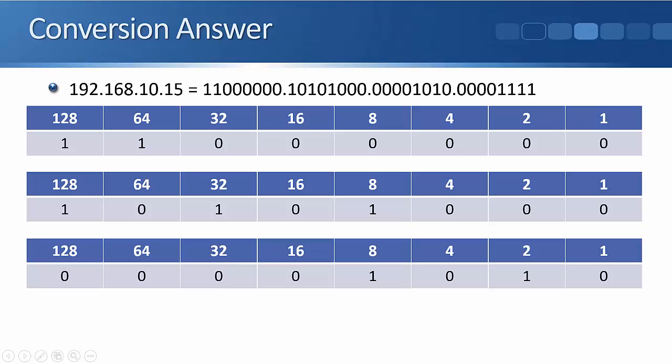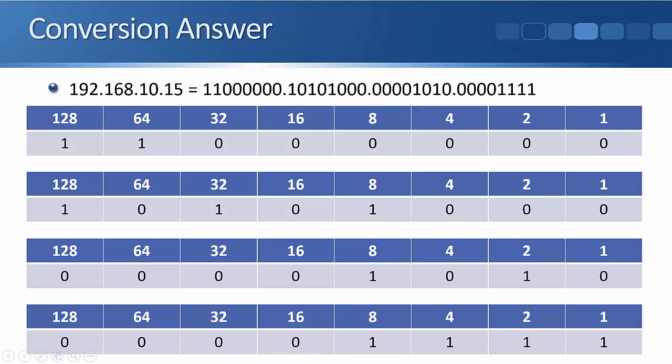The next octet, you should have got 00001010, 8 plus 2 equals 10. And then the last octet of 15, you should have got 00001111, 8 plus 4 plus 2 plus 1 equals 15. If you look at the top of the slide here, that should have been your final output. That is the complete IP address in binary.